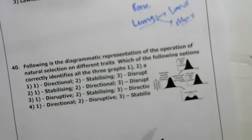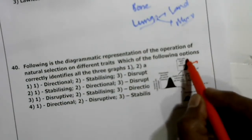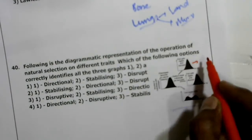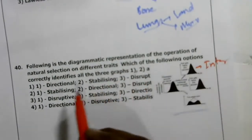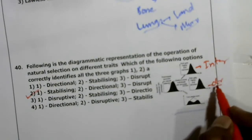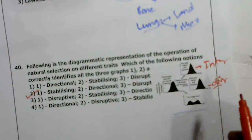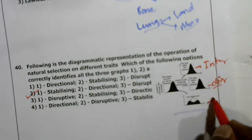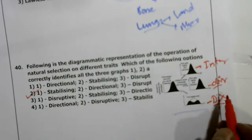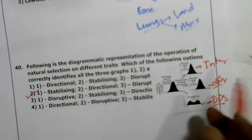Fortieth question: this diagram is based on natural selection. Stabilization — the nature selects intermediate characters. Directional selection — organisms select only extreme characters on one side. Disruptive selection — nature selects both extreme characters. Based on the diagram described, the third option — disruptive selection — is the correct answer.